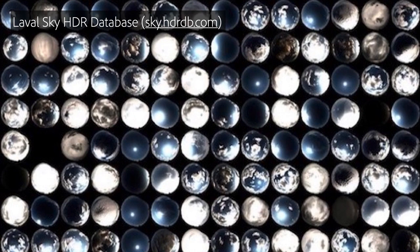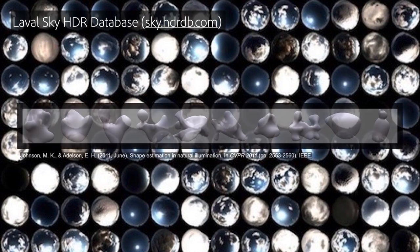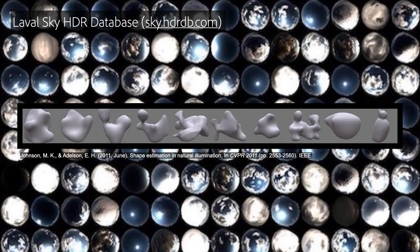To train this network, we use the Laval SkyHDR database to light the blob dataset from Johnson et al. We simulate multiple geographical locations during training. We also prevent training bias towards the blob's geometry and ensure good generalization on real objects by using windows of 16x16 pixels during training, enough to observe the local geometry but not large enough to recognize the whole object.